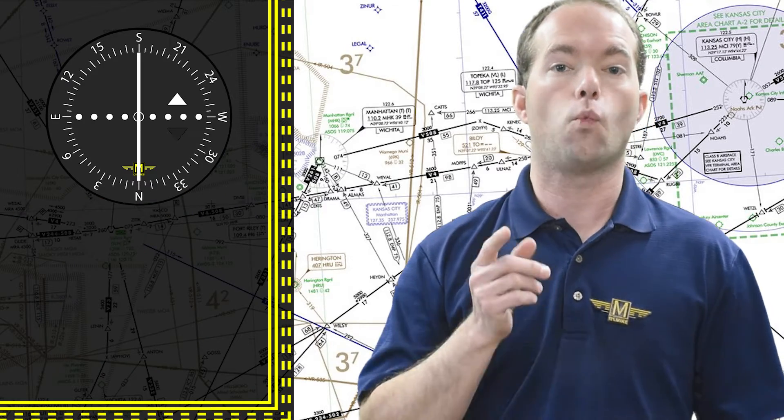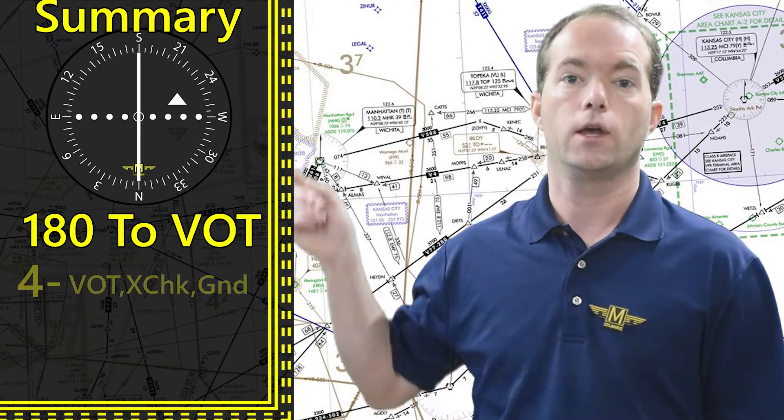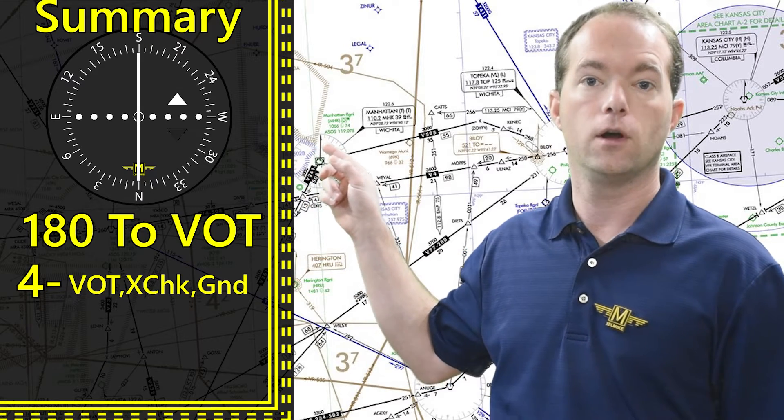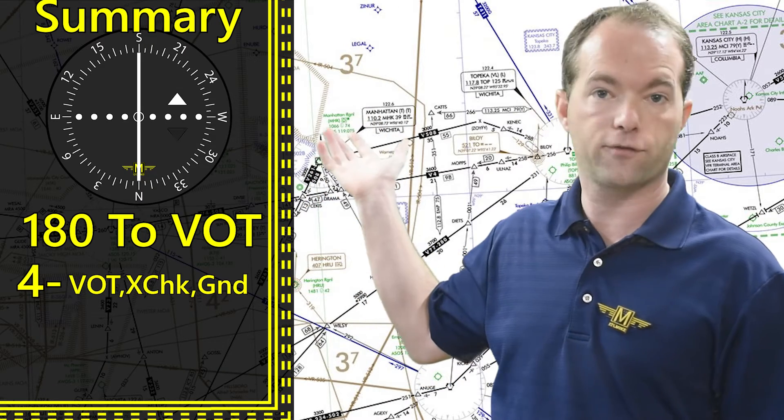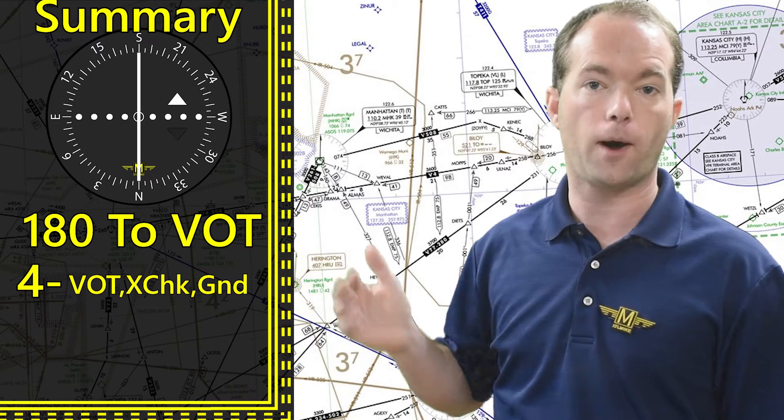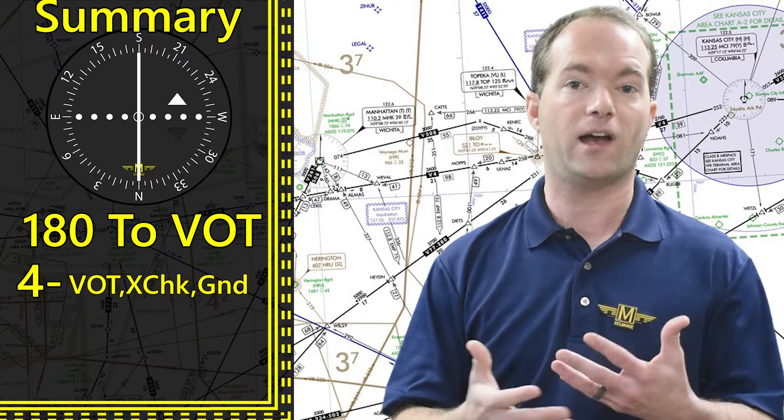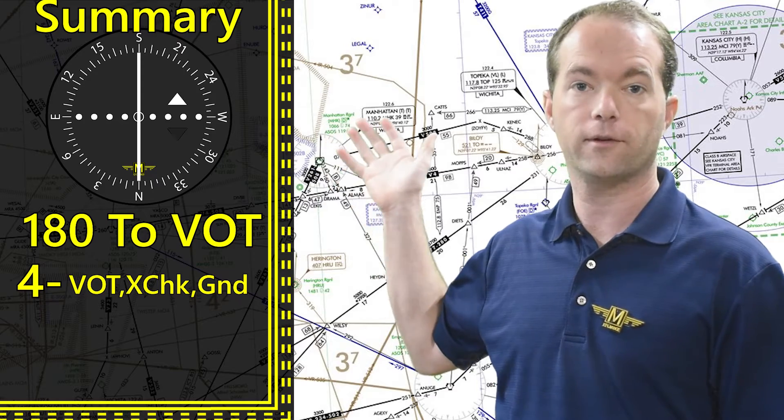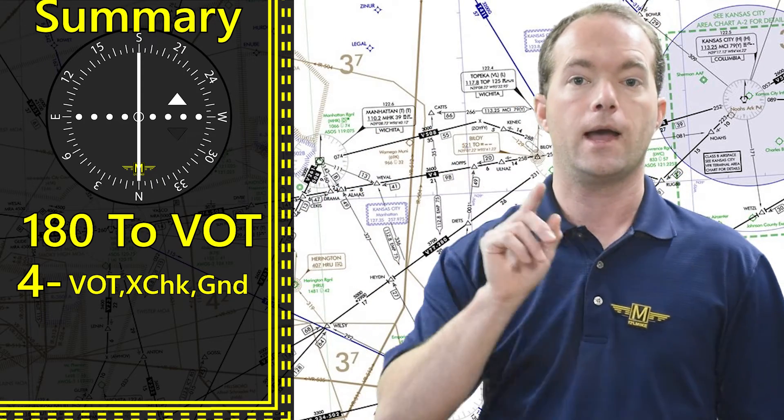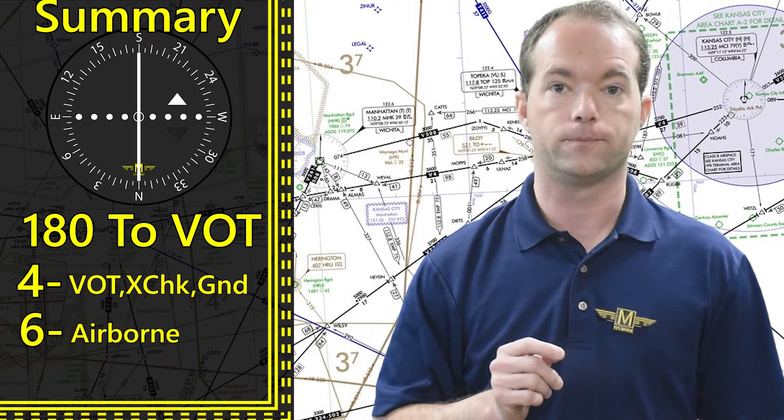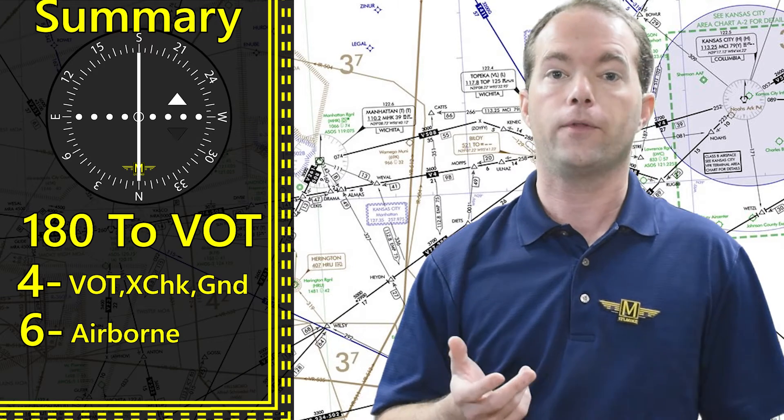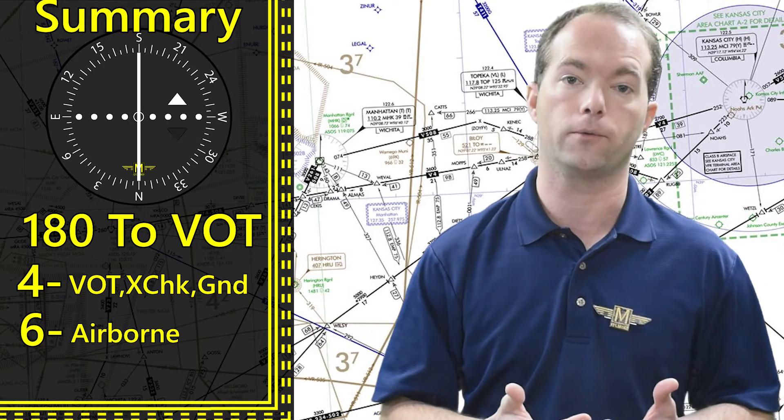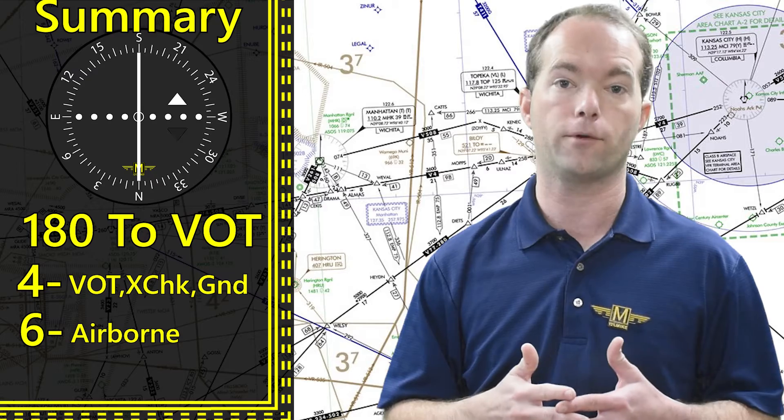So it's 182 to the VOT. You have four degrees on the ground for a cross check. Cross has four points and an X marks the spot on the ground, and so that's how I remember how many degrees you're allowed. Cross check has four points, X marks the spot on the ground, and you get six degrees airborne. I don't have a nice way to remember that one though, so you'll have to come up with a mnemonic on your own. What we need is a way to remember to spell mnemonic.